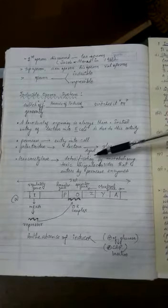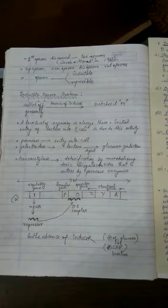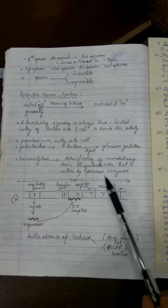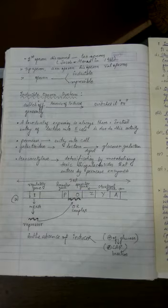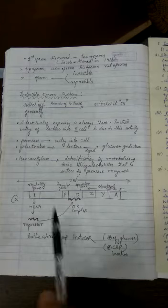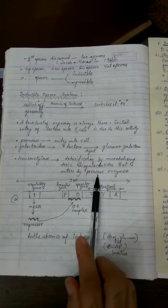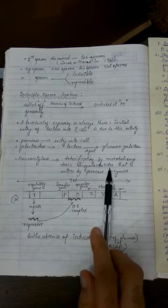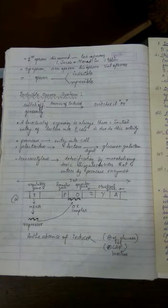And transacetylase is for detoxification by metabolizing the toxic thiogalactosides that enters along with the lactose because of the permease enzyme. Reason is there are many other molecules which are quite similar in their structure to the lactose, that's why this enzyme is unable to distinguish them and will cause sometime harmful molecules from surrounding to also enter inside.